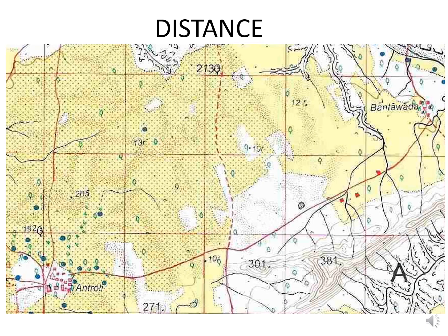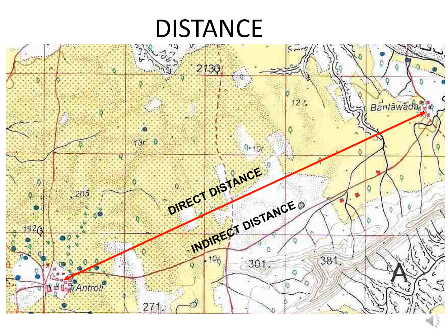Let's talk about how to find distance on a topographical map. Distance between two places can be found in two ways. Direct distance is measured using a ruler. Indirect distance is measured along a particular path, like the cart track shown here.